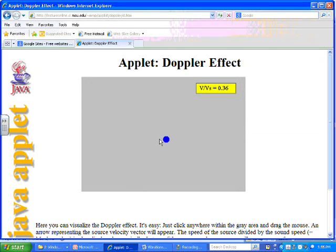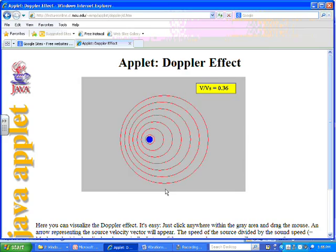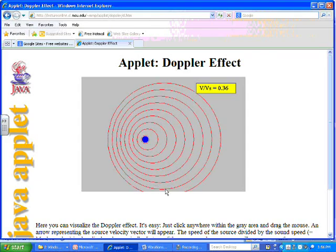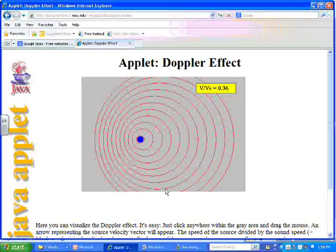But what if that source were to be moving? Well, if the source is moving, then as it's sending out a wave, it's sort of chasing after some of the waves that are in front of it, and it's getting further ahead of the waves that are behind it.